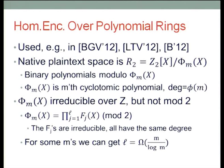It's binary polynomials modulo Φ_m(x), the m-th cyclotomic polynomial — a polynomial whose degree is φ(m), the Euler totient function. Those polynomials are irreducible over the integers, but modulo 2, when you look at them as plaintext polynomials, they are not necessarily irreducible — they can factor into a product of irreducible polynomials, all of the same degree. Depending on what m is, the number of factors can vary, but you can choose a family of parameters m such that the number of factors grows almost as quickly as m, up to a log factor. So you have the ring polynomial factoring into very many pieces — it's a very smooth polynomial in that sense.